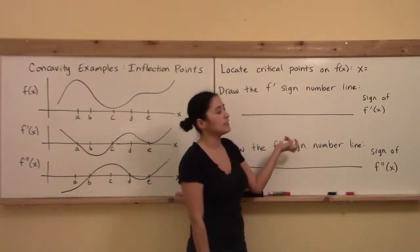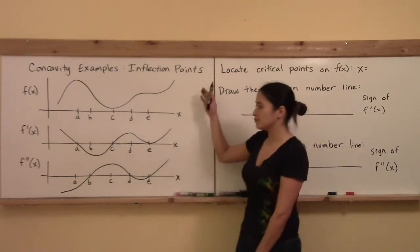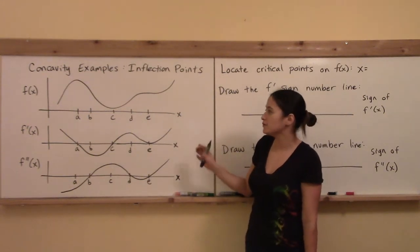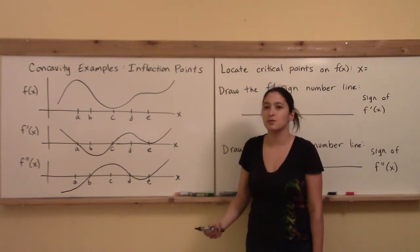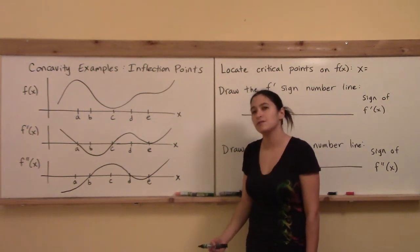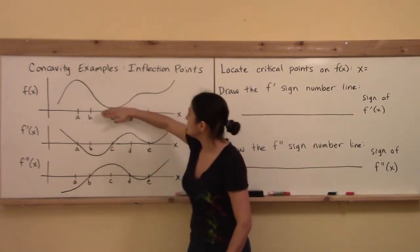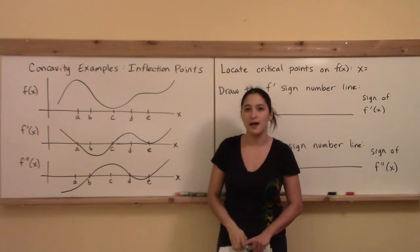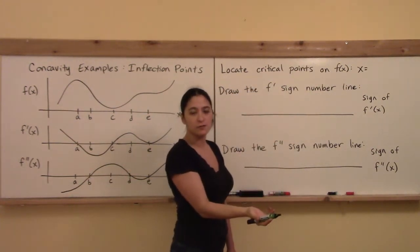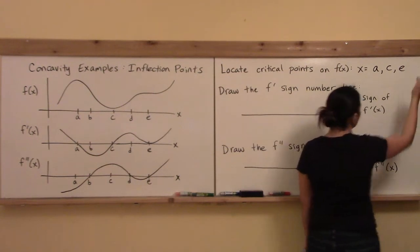Critical points are the points where either the derivative equals zero or the derivative does not exist. From these three graphs, there are no places where the derivative does not exist, so critical points are just defined as the places of horizontal tangents — where the derivative equals zero. You can see that A, C, and E all satisfy that. Locating all the critical points on f(x) means finding where the derivative equals zero: x equals A, C, and E.